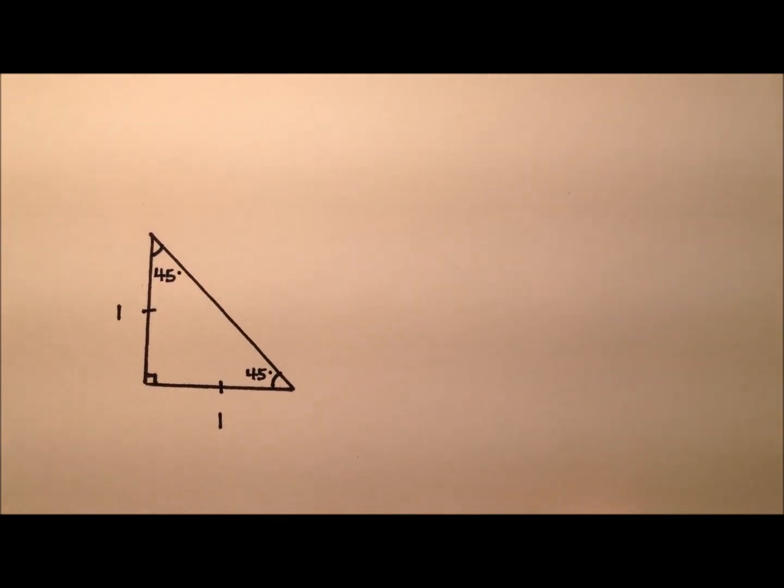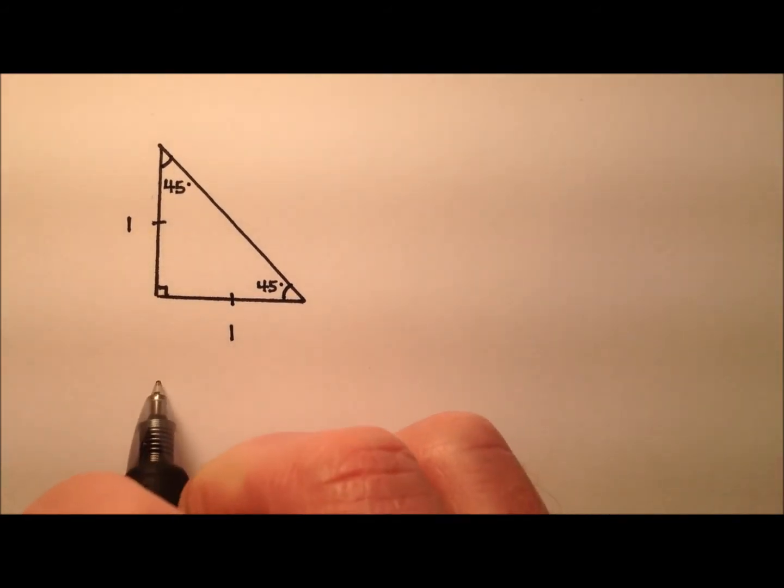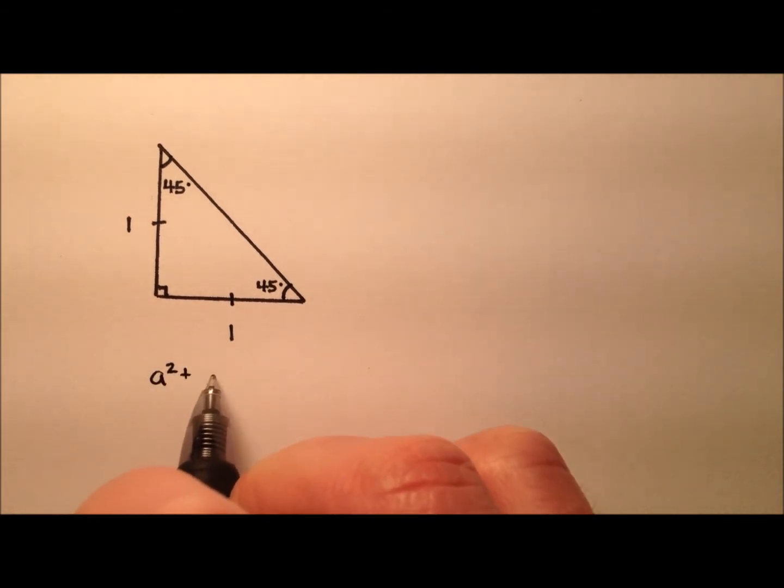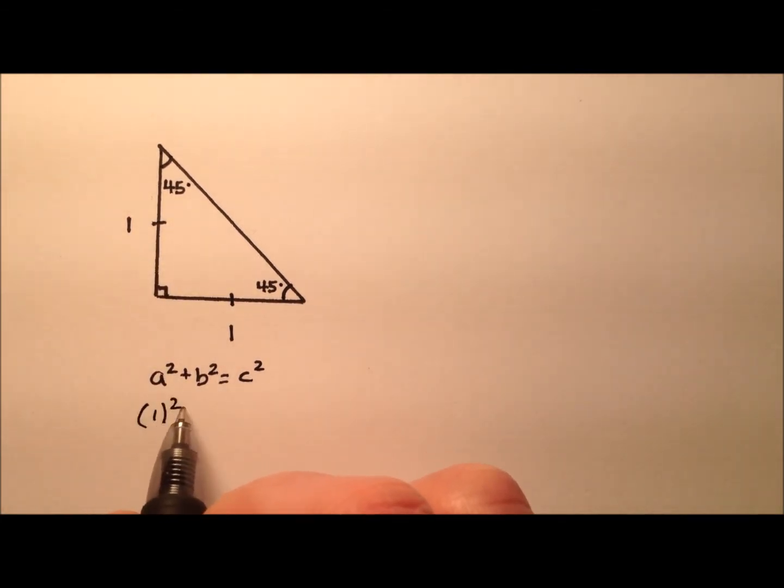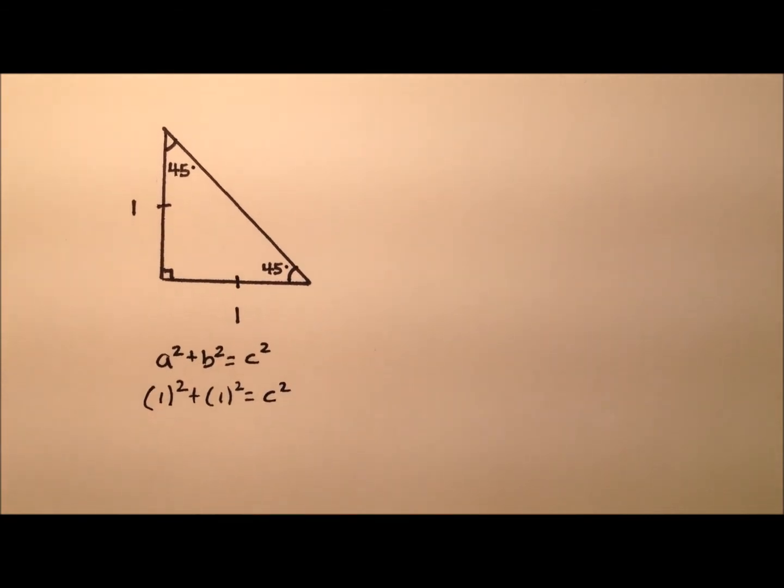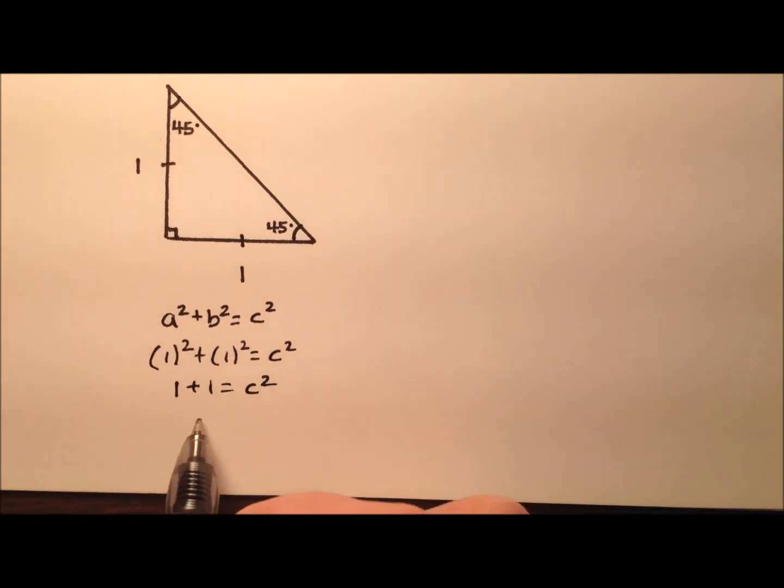Now we can find the length of this hypotenuse by using the Pythagorean theorem, which states that a² + b² = c². Our leg lengths are both one, so we'll say 1² + 1² equals the square of the hypotenuse. So one plus one equals c², of course, two equals c².